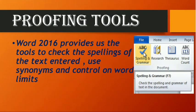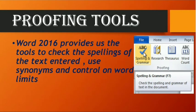Now the next topic is proofing tools. Word 2016 provides us tools to check the spelling of text entered, find synonyms, and control word limits. In MS Word, these proofing tools help us check whether the spelling we have written is correct or not, how many words are there, and if we want to write another meaning of a word — that is, a synonym. This is proofing tools.